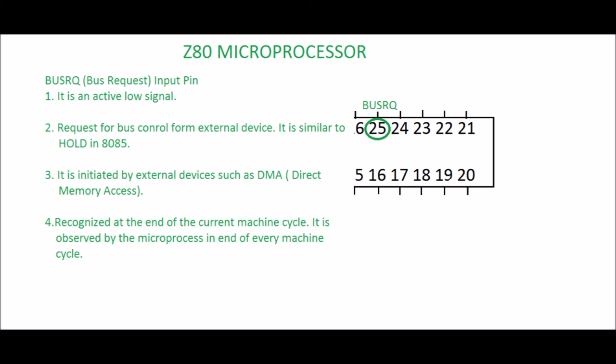Pin 25: BUSRQ, Bus Request. It is an input pin and an active low signal. It is a request for bus control from an external device, similar to HOLD in 8085. It is initiated by external devices such as DMA (direct memory access). An I/O device can send a low signal to bus request to use the address bus, the data bus, and the control signals. The external device can use the buses, and when its operations are complete, it returns control to the microprocessor. It is recognized at the end of the current machine cycle.